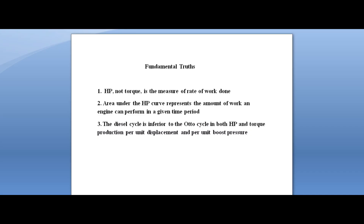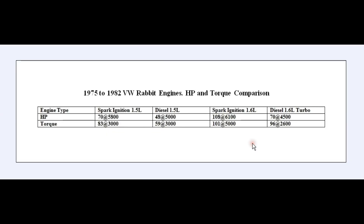For some fundamental truths: horsepower, not torque, is a measure of the rate of work done. The area under the horsepower curve represents the amount of work an engine can perform in a given amount of time. The diesel cycle is inferior to the Otto cycle in both horsepower and torque production per unit displacement and per unit boost pressure. Most diesel engines today are turbocharged partly because they produce very little horsepower and are fairly lame without forced induction.